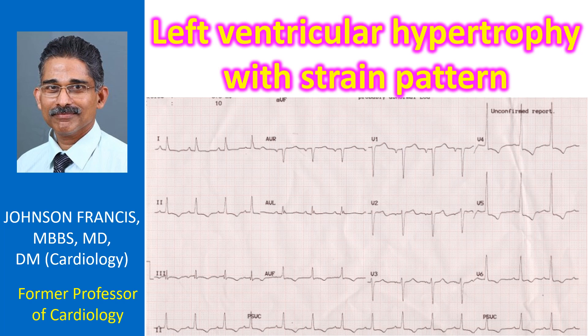Tall R waves in V4 and V5 with down-sloping ST segment depression and T wave inversion are suggestive of left ventricular hypertrophy with strain pattern.